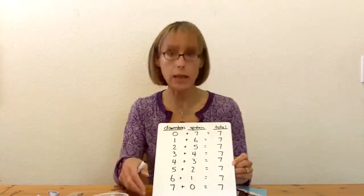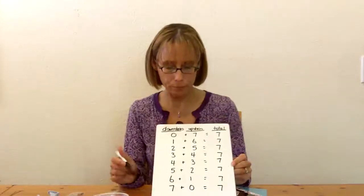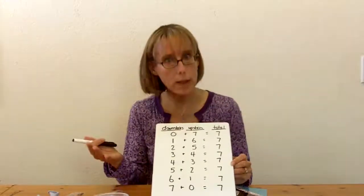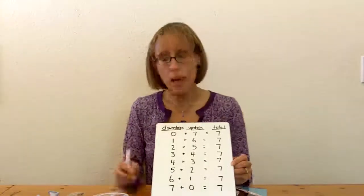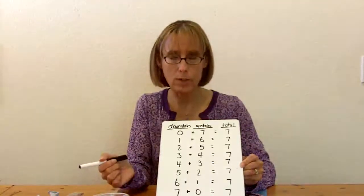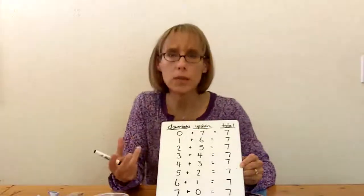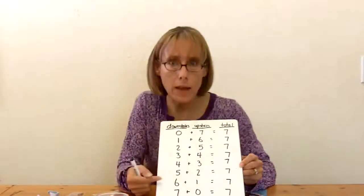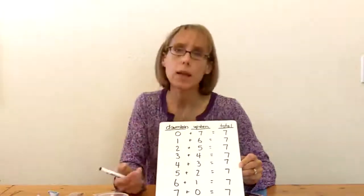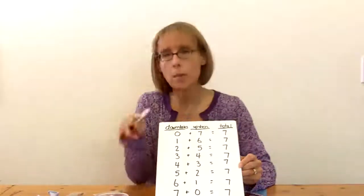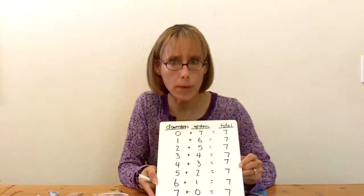We often forget poor little old zero, so it's really important that we include it, because zero is a number and it needs to be represented. Some students may see that zero plus seven is the same as seven plus zero. If they don't, try to guide them in that direction, because what you're doing is introducing them to the commutative property of addition, which says that the order of the addends does not make a difference. So zero plus seven is the same as seven plus zero, or one plus six is the same as six plus one — which is sneaking in a little algebra and discussing properties of number, which is so important.